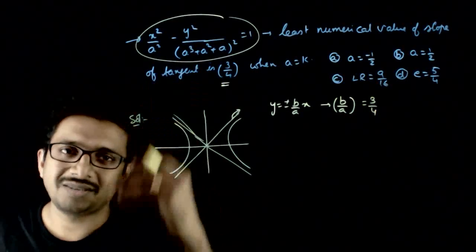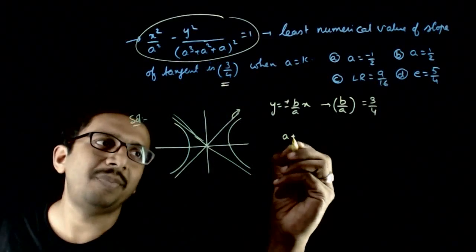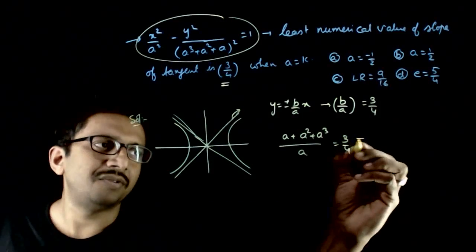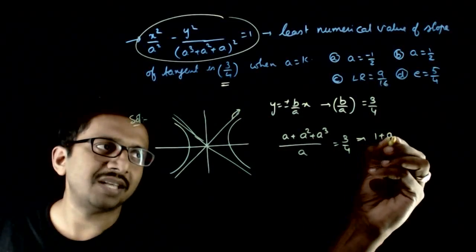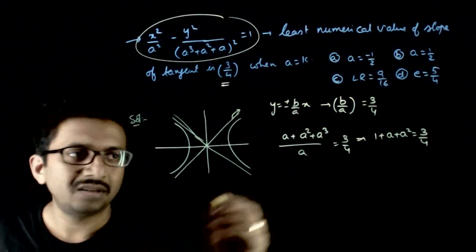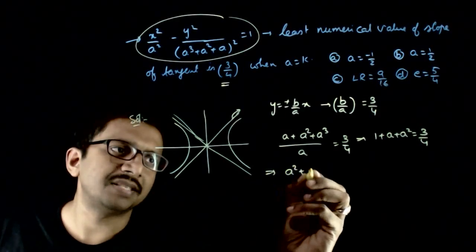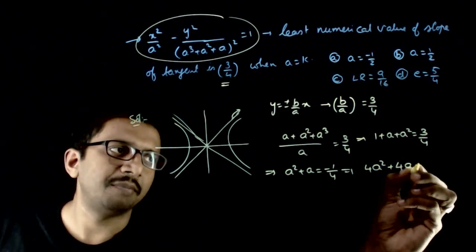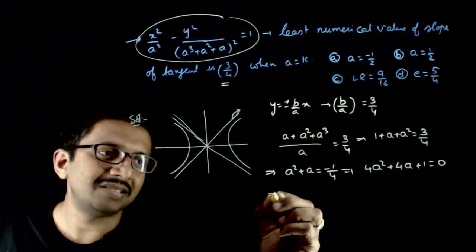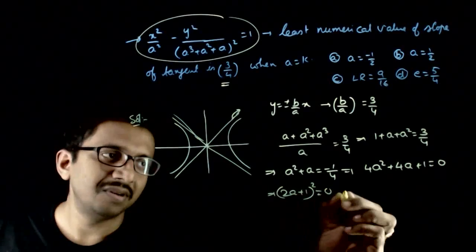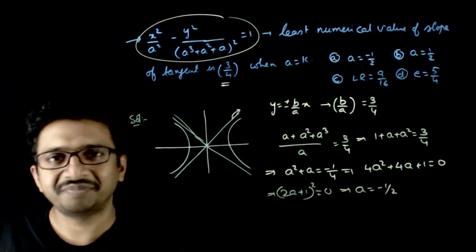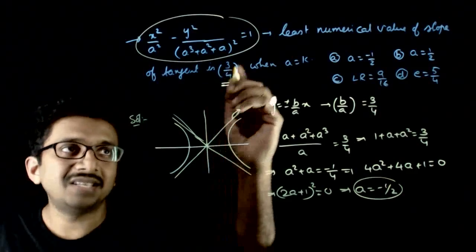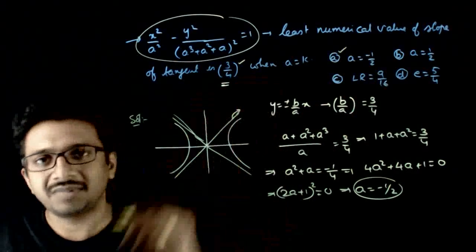So what is b and what is a? As you can see, b/a = (a + a²)/a = 1 + a, which equals 3/4 according to the given question. Cancelling out an a, you get 1 + a = 3/4, which implies a² + a = -1/4. This implies 4a² + 4a + 1 = 0, which implies (2a + 1)² = 0, so a = -1/2. The least numerical value of slope of tangent equals 3/4 when a = -1/2.